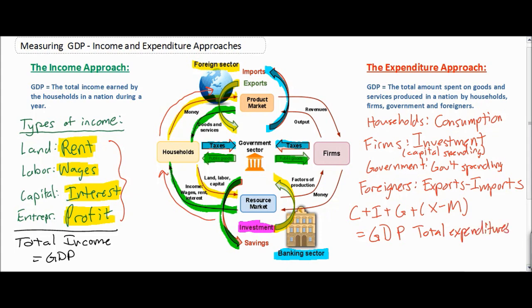Now, why does the total income of a nation equal the total expenditures? We're saying that GDP, regardless of how it is found, will equal the sum of either wages, rent, interest, and profits — or consumption, investment, government spending, and exports minus imports. Any money earned by households in the resource market is ultimately spent by households in the product market. Therefore, income earned is money spent: income equals expenditures.